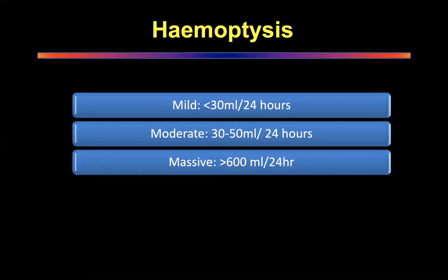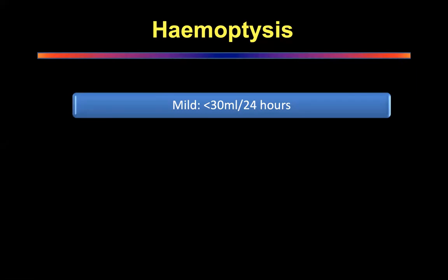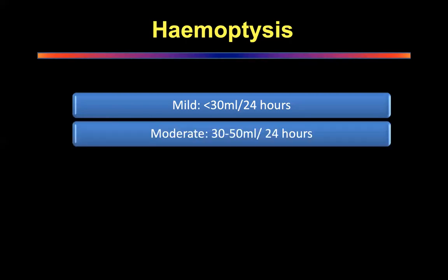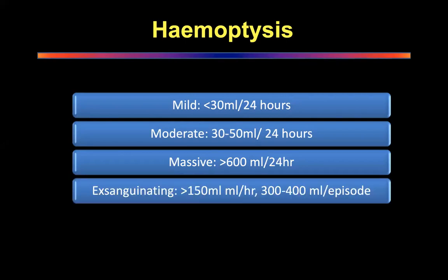In the severe category there are two types: massive and exsanguinating. Massive is more than 600 ml over 24 hours, and exsanguinating is more than 150 ml per hour or 300 to 400 ml per episode. To summarize: mild is less than 30 ml per day, moderate is 30 to 50 ml per day, and massive is more than 600 ml per day or more than 150 ml per hour, with each episode at least 300 to 400 ml.